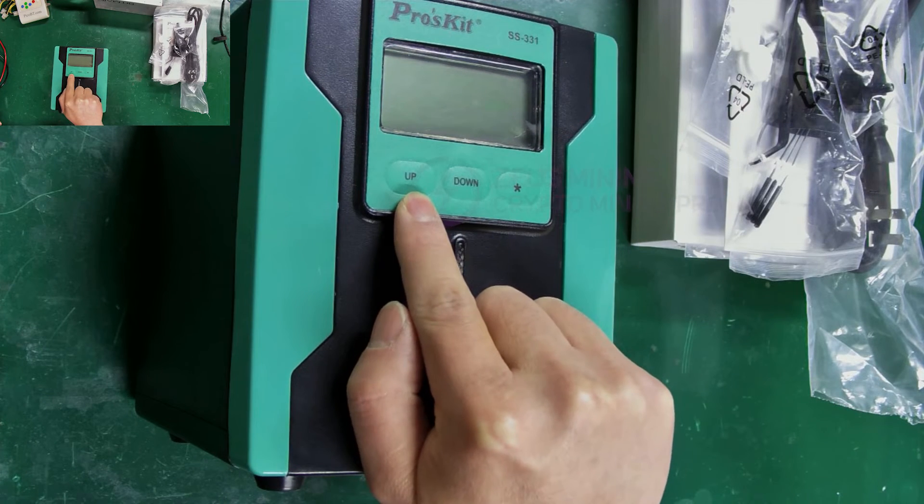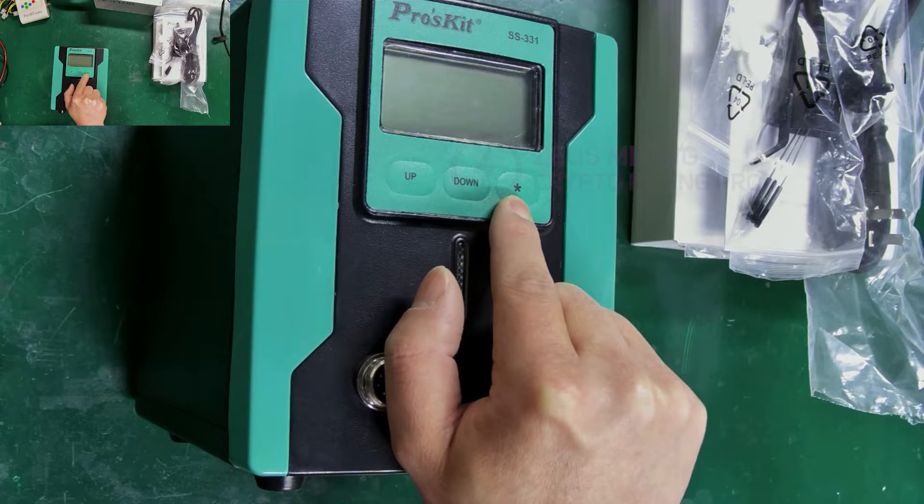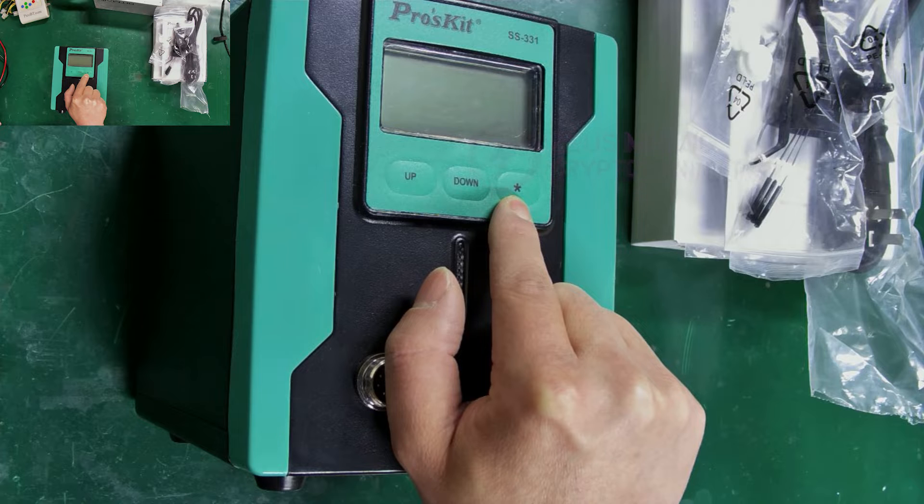Up, for increasing the temperature; down, for decreasing the temperature; and the last one is the celsius to fahrenheit switch button.